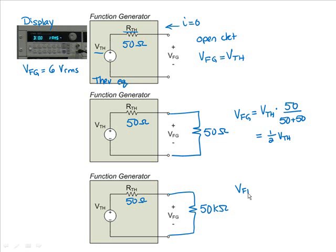And since 50 kilo-ohms is so much bigger than the internal resistance of 50 ohms, that means that the output voltage is approximately equal to the Thevenin voltage.